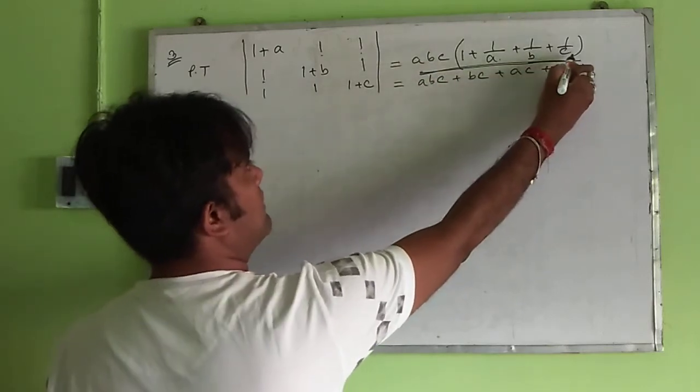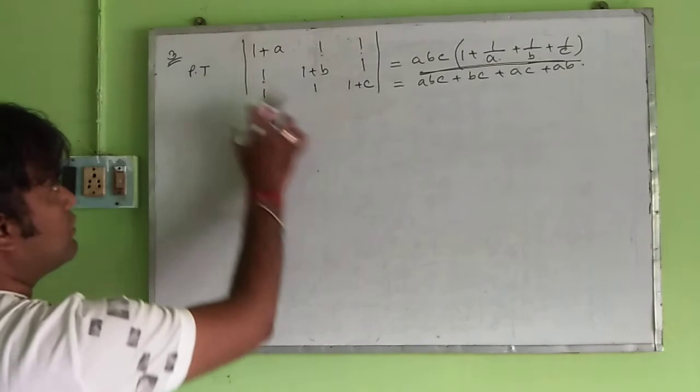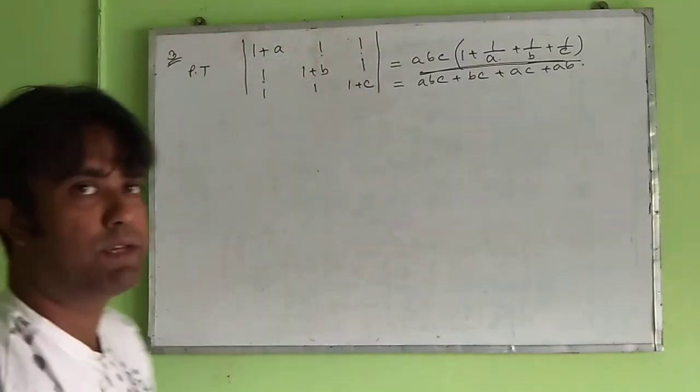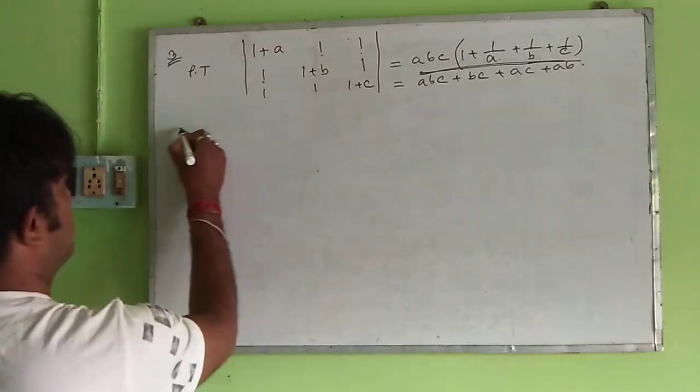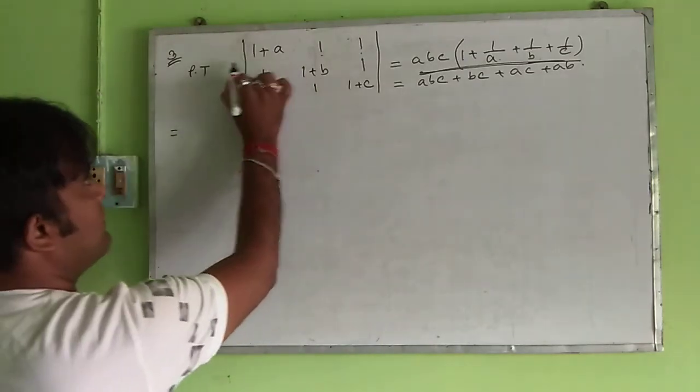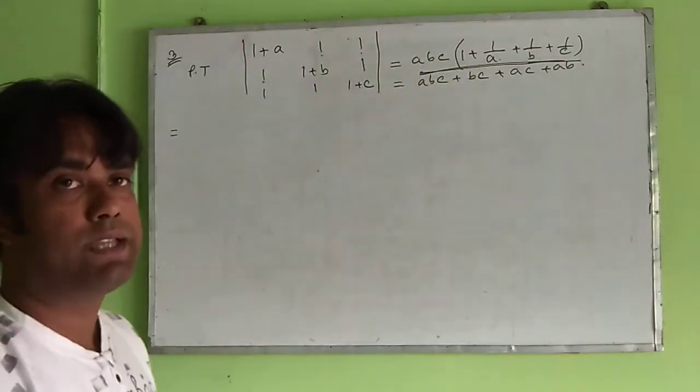There is 1 by A, 1 by B, 1 by C, but here is no 1 by A, no 1 by B, no 1 by C. To follow that, from the first row, we take common A.